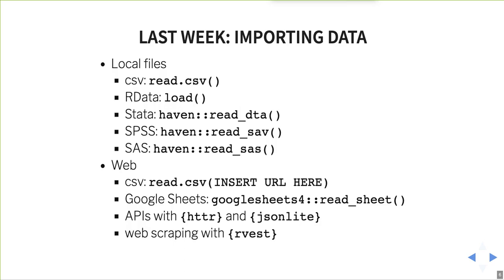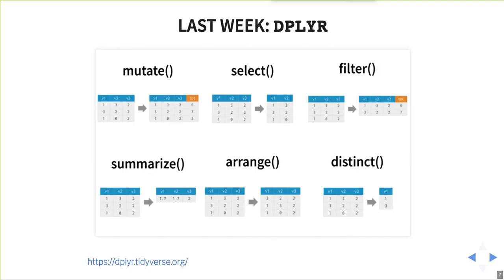Last week, we worked on importing data. I showed you if you have files that are local or on the web, some common approaches you would take to load those into R. The message was: if the data exists somewhere, we can get it into R and work with it. We also looked at the dplyr package, a member of the tidyverse, and a few key function verbs: mutate to create new variables, select to grab specific columns, filter to grab specific rows to exclude data, summarize to take a bigger data set and make it smaller, arrange for sorting, and distinct to reduce duplicates. I use these six in just about every analysis.